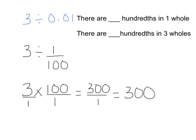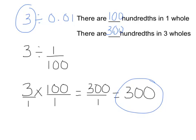Now when I look at my question up here, there are blank hundredths in one whole. So that means there are 100 hundredths in one whole. How many hundredths are in 3 wholes? That would be 300. We can see that when I divided 3 by 1 hundredths, I got 3 hundredths.